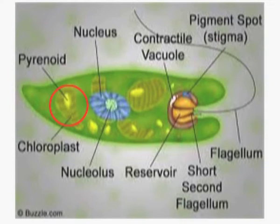Euglena are autotrophs and can manufacture their own food. As you can see in the diagram, they contain chloroplasts which contain chlorophyll, required for the synthesis of their own food in the presence of sunlight.